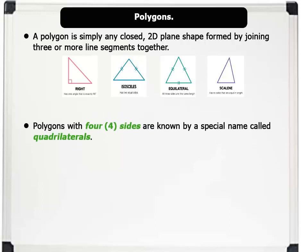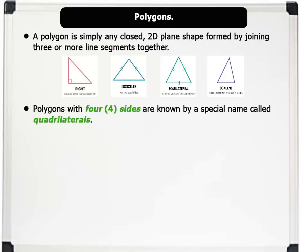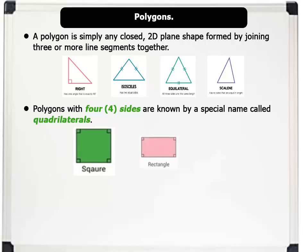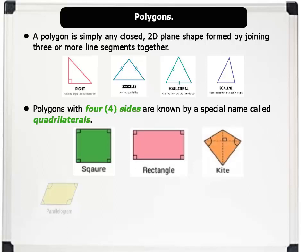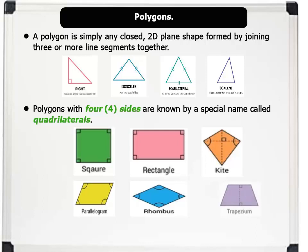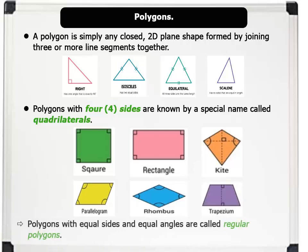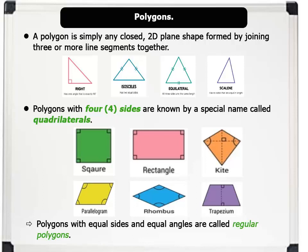Polygons with four sides are known by a special name called quadrilaterals. They include the square, rectangle, kite, parallelogram, rhombus, and trapezium. Note that polygons with equal sides and equal angles are called regular polygons. Examples include a square, an equilateral triangle, etc.